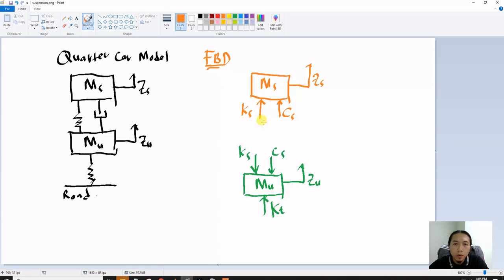So from this free body diagram we will generate the first formula for this one. Okay, from equation F equal to ma, so a is acceleration.